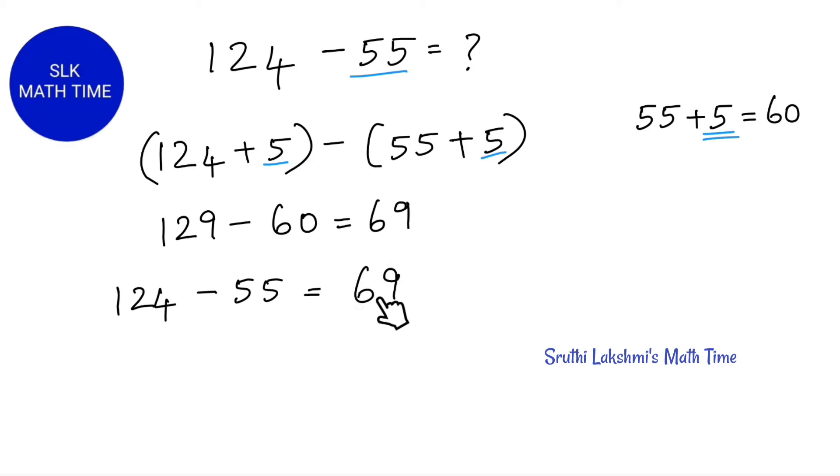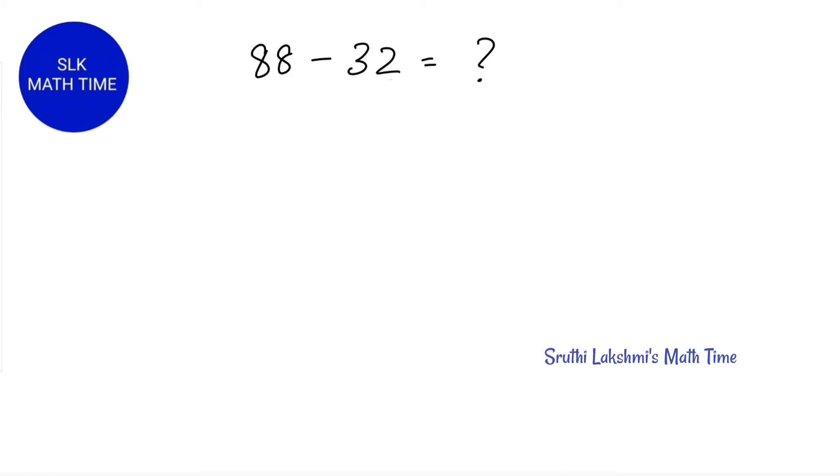The difference is the same because we added 5 to both numbers. Now let's take a look at one final example which is 88 minus 32.